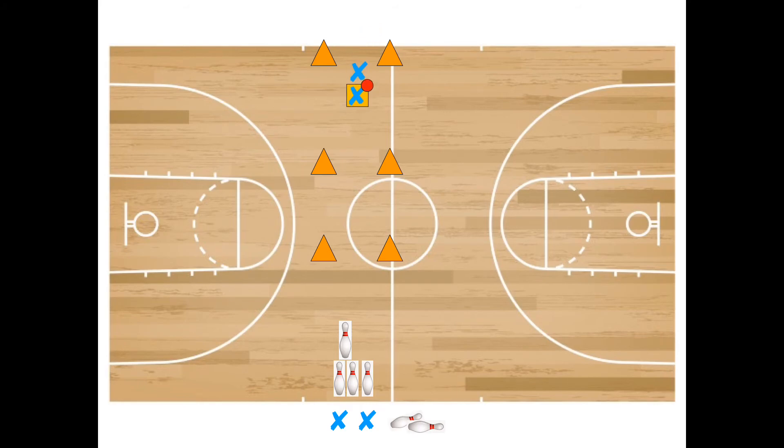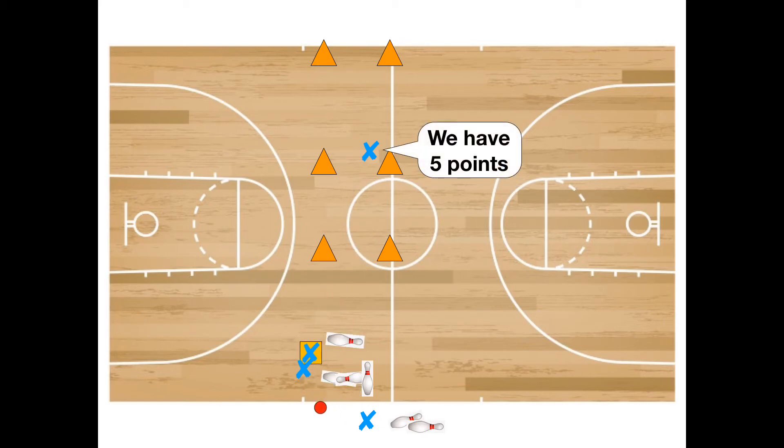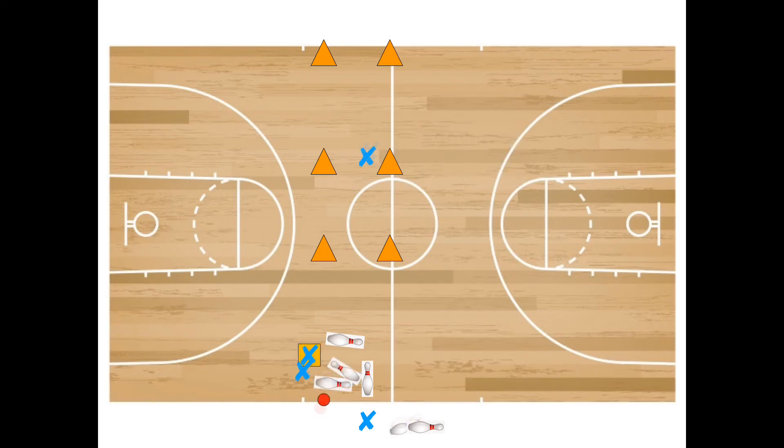The two players that are down on the opposite side of the pins have two jobs. One is to stop the roller from rolling into the cones or pins, and two is to retrieve the ball and give it back to the other team. Now this is why I like to make two triangles with my bowling pins.